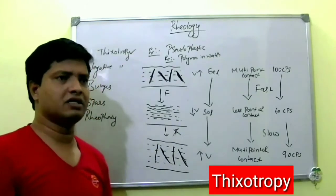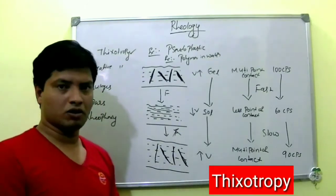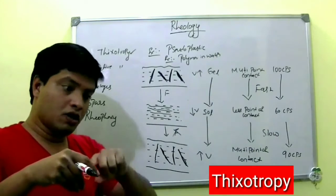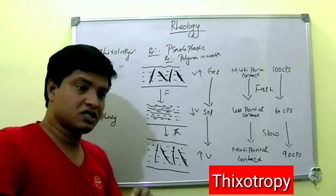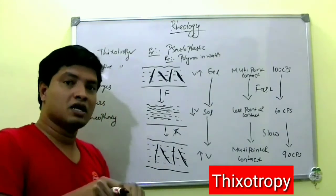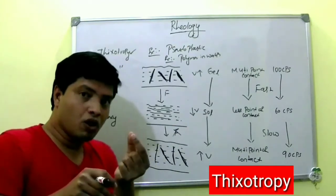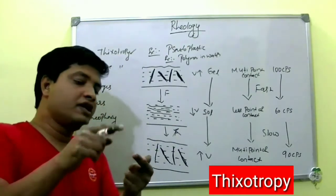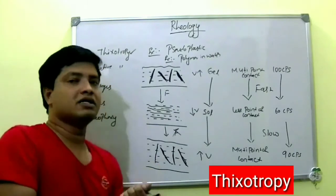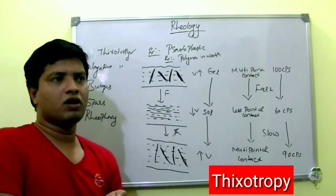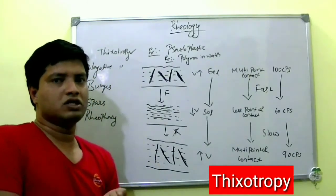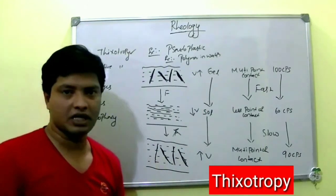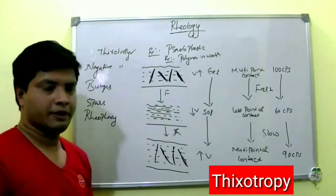We have many applications like this. For example, ointment in a tube — the ointment is very thick. When you apply shear stress, it loses its consistency and comes out through the small nozzle. When it comes out, it again gains back its consistency. So we have plenty of applications for thixotropic systems.